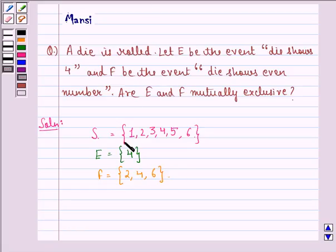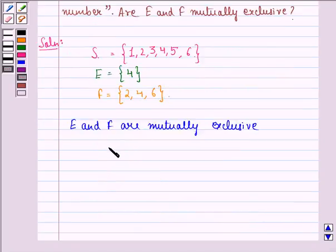Now we have to tell whether E and F are mutually exclusive or not. We say that E and F are mutually exclusive if E intersection F is equal to phi.